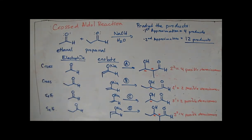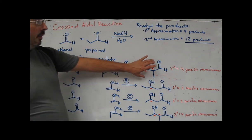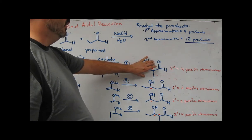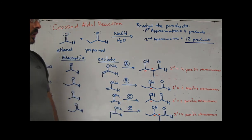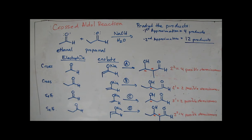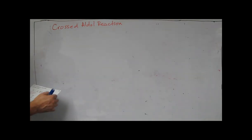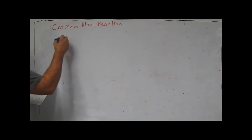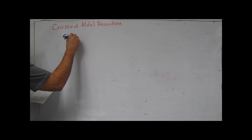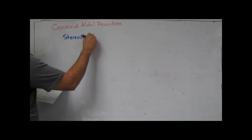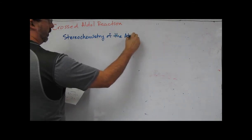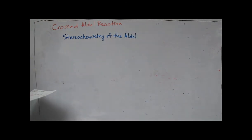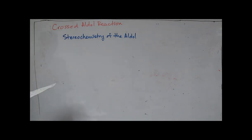What I want to do next is look at the four possible stereoisomers for product A, and then you can go through and do the other three as a check for yourself. We'll continue our discussion about the stereochemistry of this crossed-aldol reaction and why product A is actually four different stereoisomers.